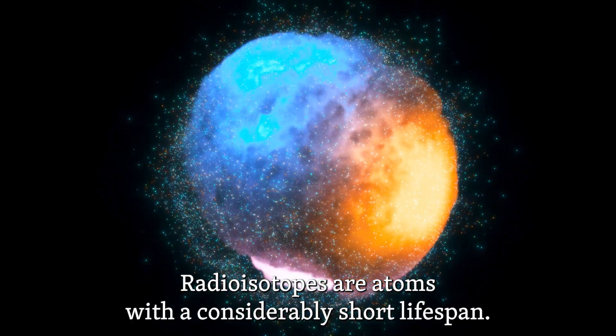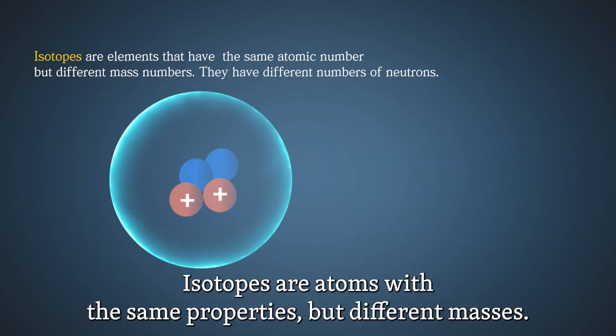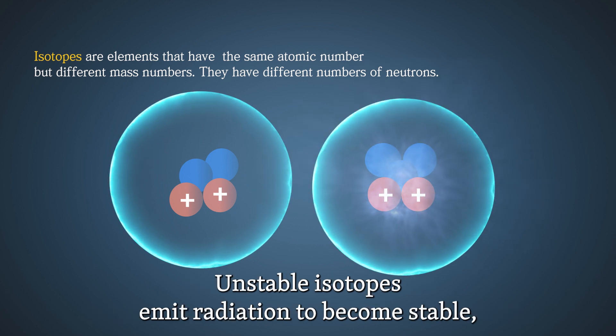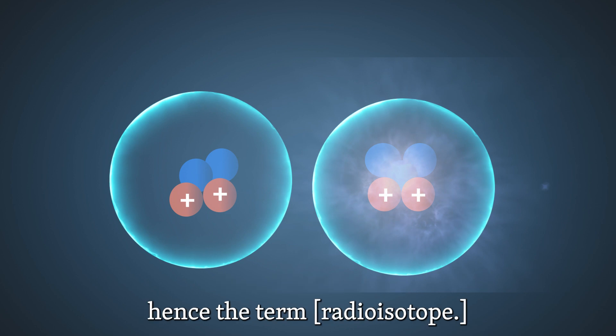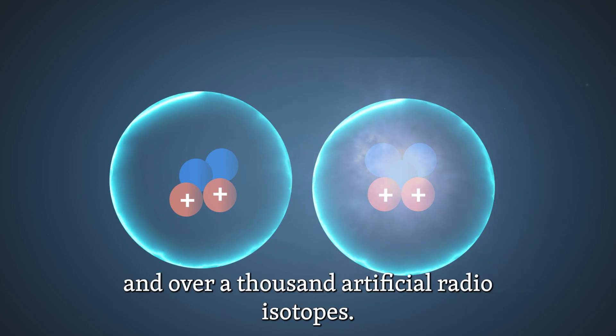Radioisotopes are atoms with a considerably short lifespan. Isotopes are atoms with the same properties but different masses. Unstable isotopes emit radiation to become stable, hence the term radioisotope. There are dozens of natural radioisotopes and over a thousand artificial radioisotopes.